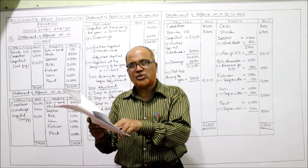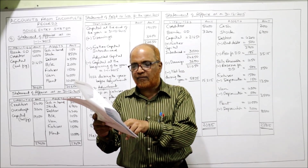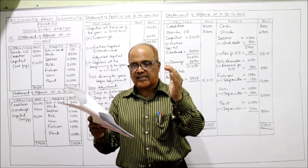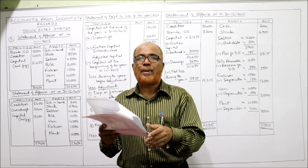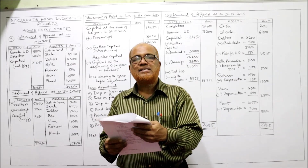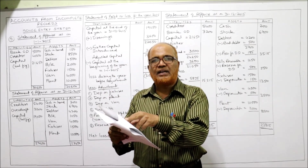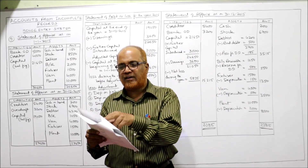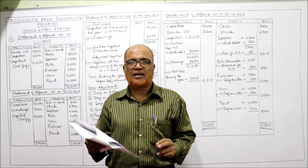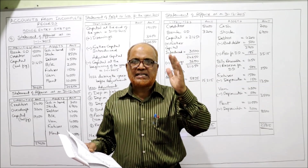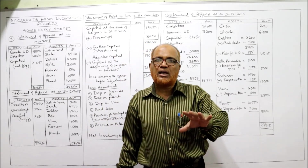Then how is profit ascertained? By comparing capital at the beginning of the year with capital at the end. In our problem, the year is 2015, so 1st January 2015 is the beginning and 31st December 2015 is the end. We are given assets and liabilities at both dates: stock, sundry creditors, sundry debtors, cash in hand, bank overdraft, bills receivable, fixtures, motor van, and plant.